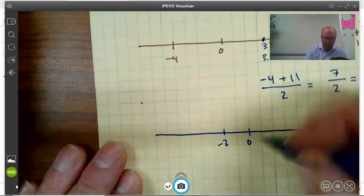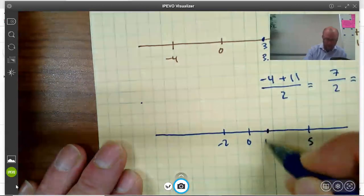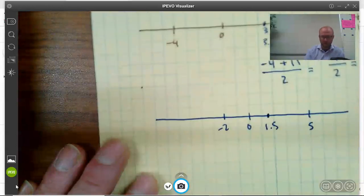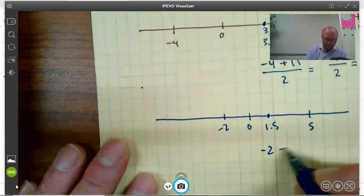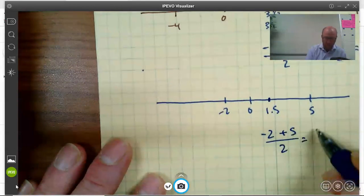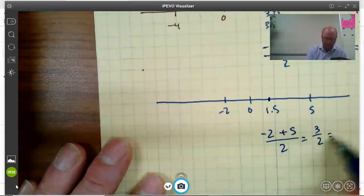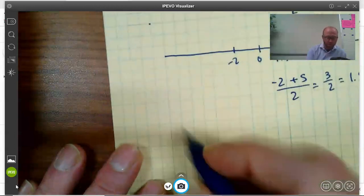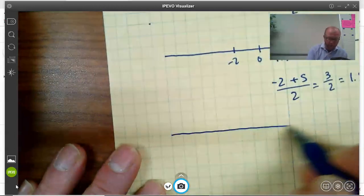But if I use that same formula, negative 2 plus 5 over 2, negative 2 and 5 is 3, over 2, which is 1.5. And they don't have to be two negative numbers. Maybe it's a couple of positive numbers.